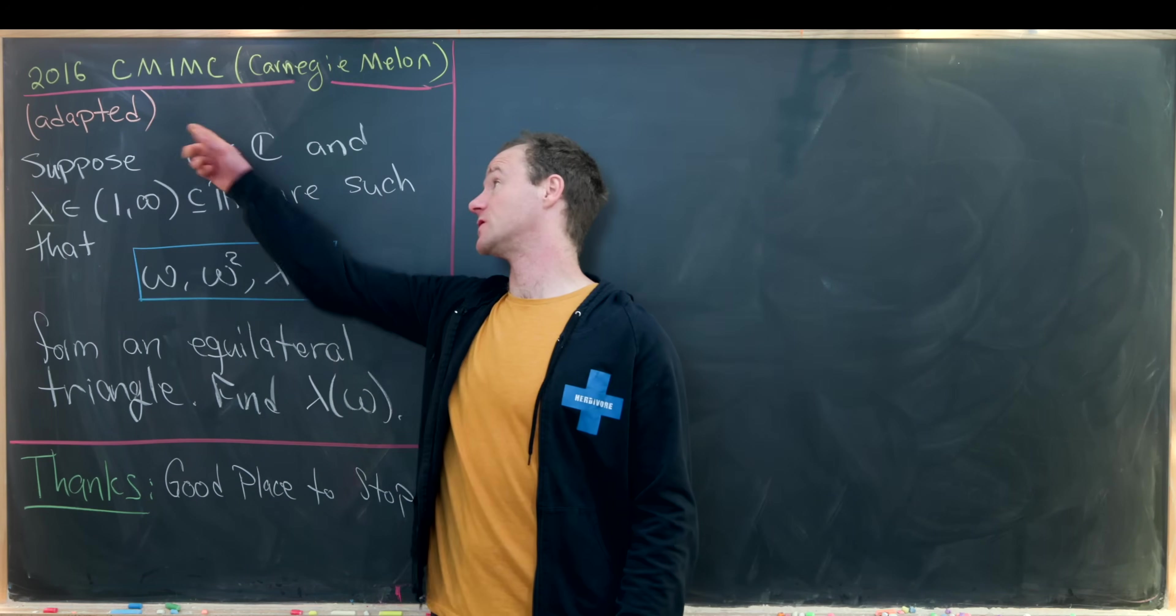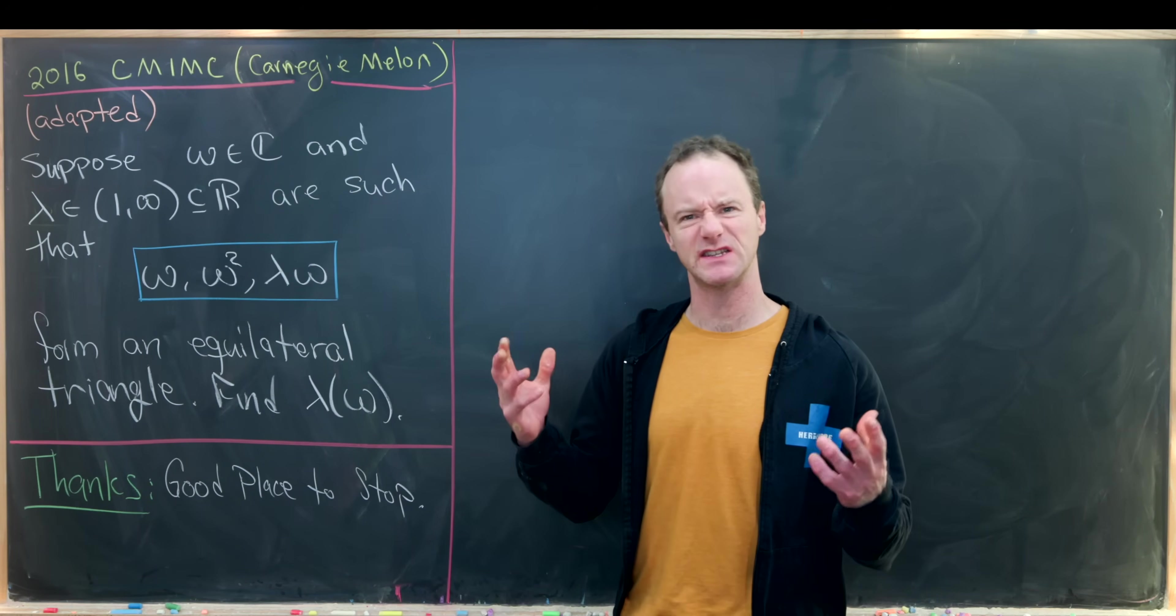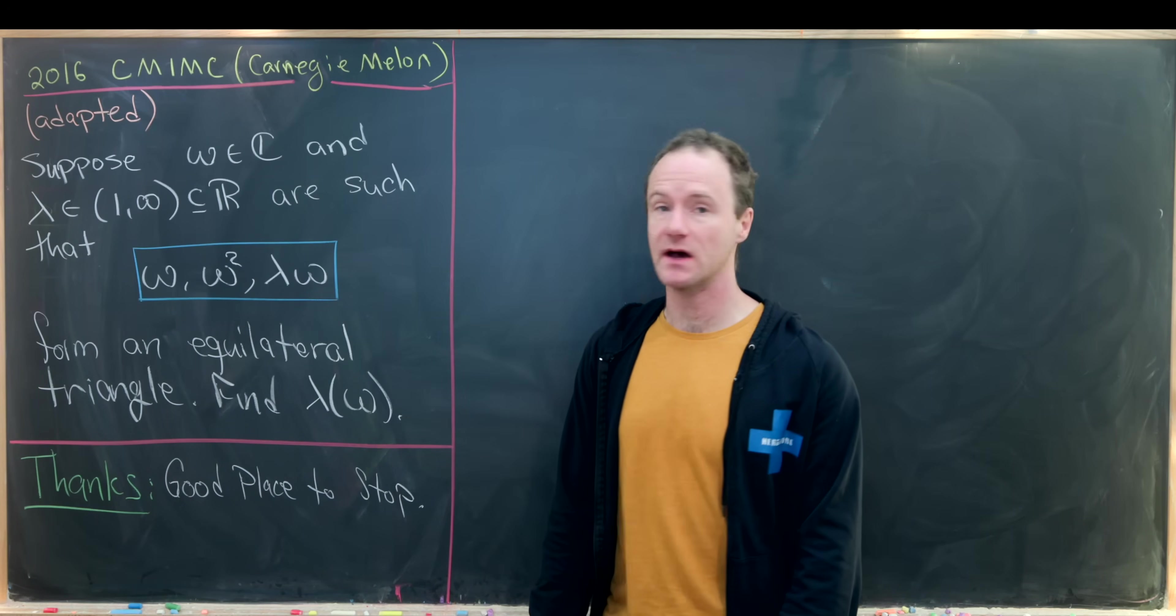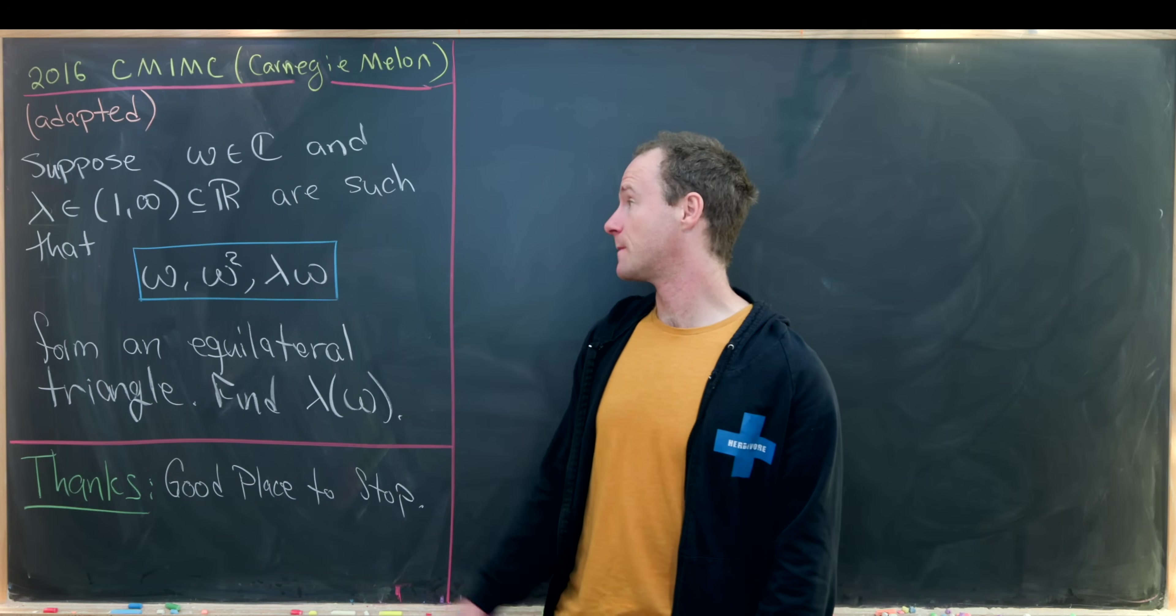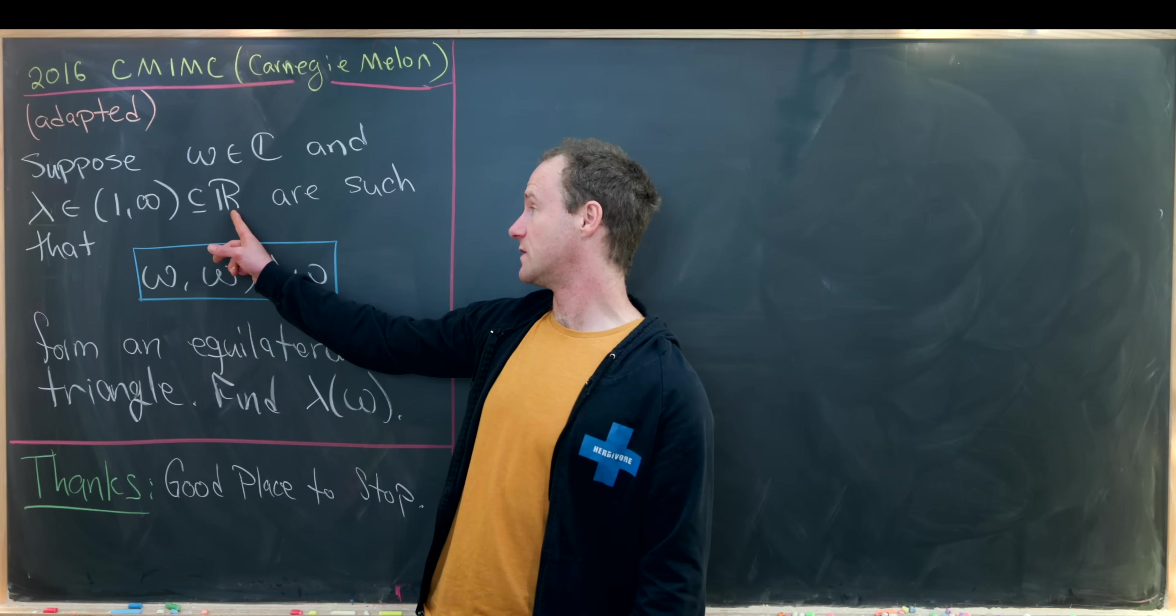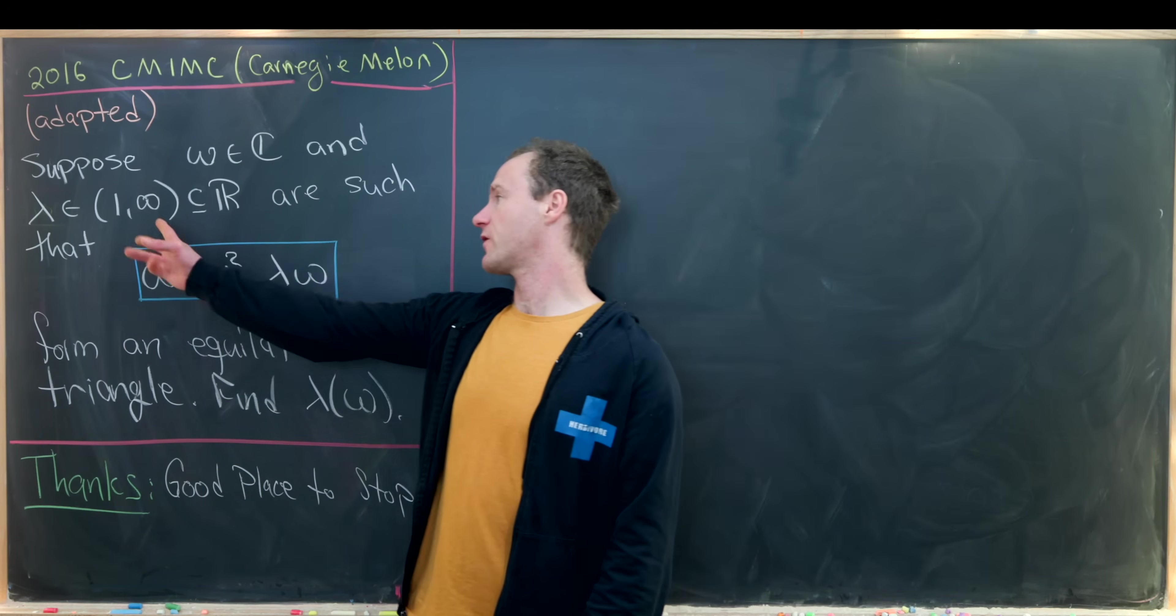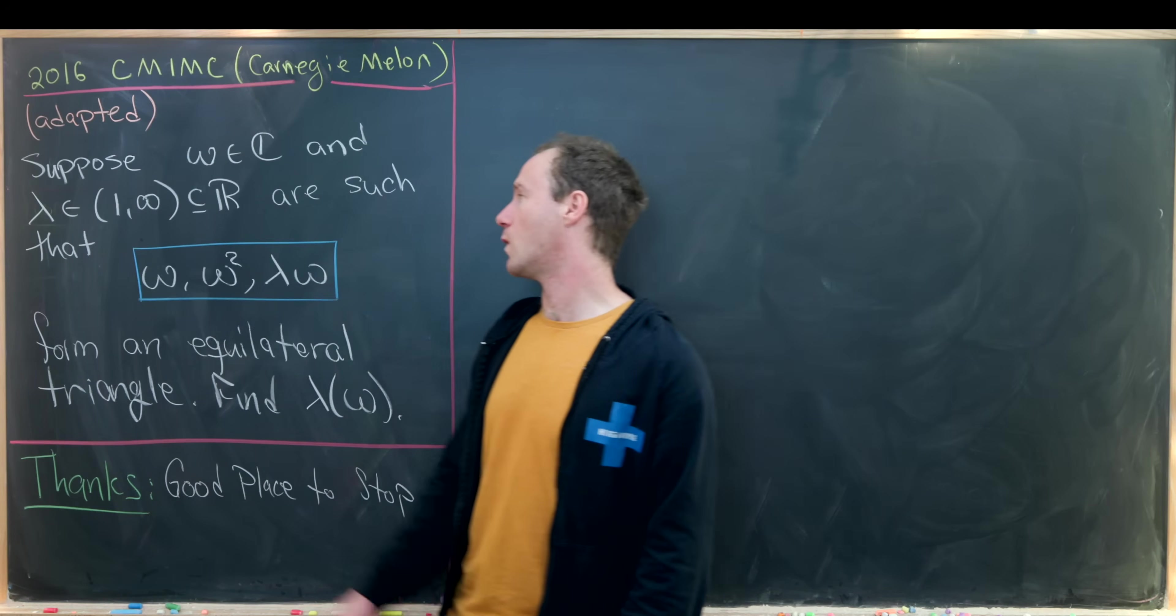And I've also adapted this problem a little bit to generalize it. So let's suppose that omega is a complex number, and lambda is a real number which is strictly greater than 1. So in other words, it's on this interval from 1 to infinity.